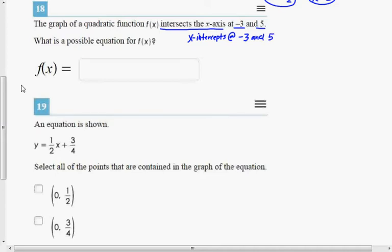And when you know what the x-intercepts are, then you know this, that the solutions are x equals negative 3 and x equals 5. So what this is going to be is working backwards.